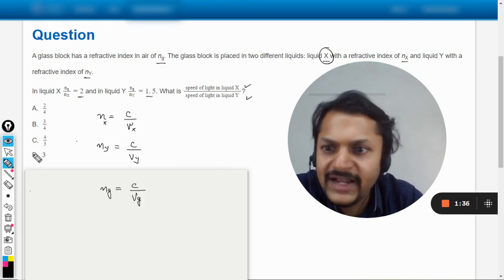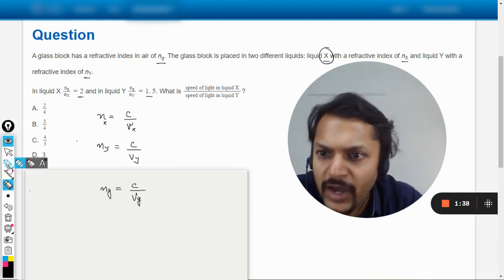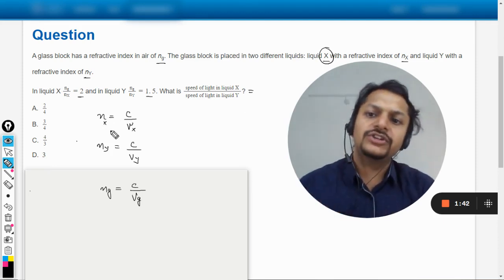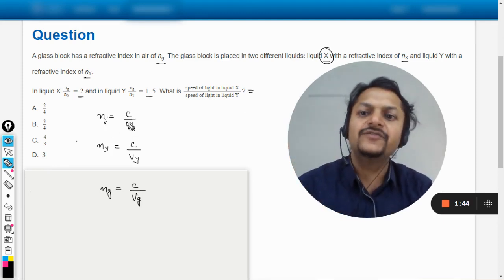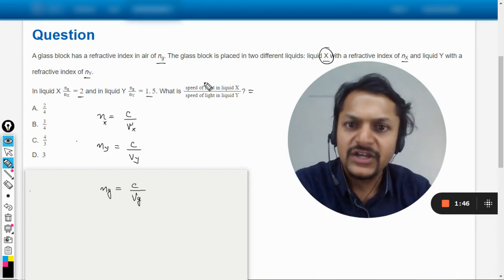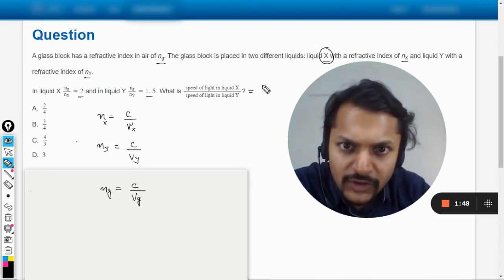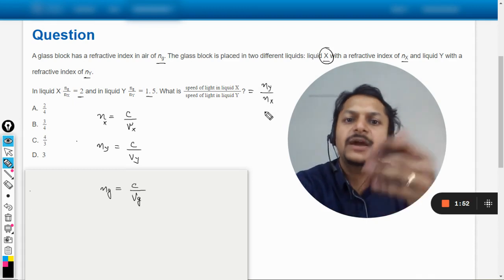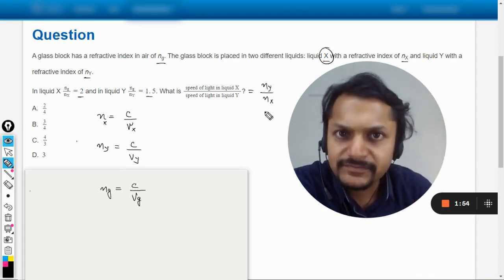Now let us see the speed of light in liquid X and the speed of light in liquid Y. We have come to this conclusion that refractive index of X is inversely proportional to speed of light in X. So you can always write VX/VY = NY/NX.